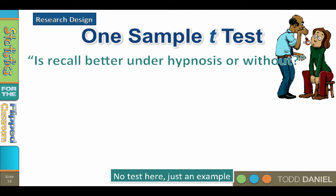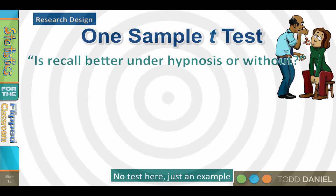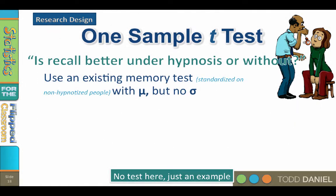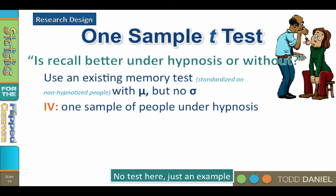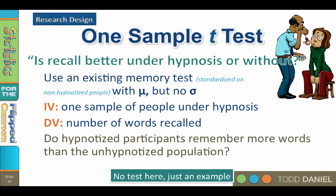Let's return to the research design example that we first learned about when we studied the Z-Test. We are testing the research question: is recall better under hypnosis or without? We find a memory test that reports the mean scores for people who are not under hypnosis, and administer this same memory test to a sample of people who are under hypnosis. The independent variable is the condition — whether or not the subjects are under hypnosis. The dependent variable is memory: the number of words recalled.